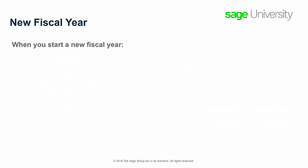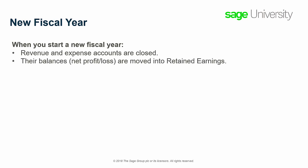When you start a new fiscal year, Sage 50 automatically closes your revenue and expense accounts, moves their balances — or net profit or loss — into the retained earnings account, and sets their balances to zero.